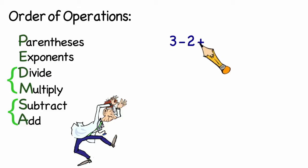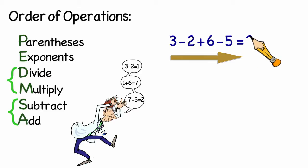3 minus 2 plus 6 minus 5. According to the rules of operation, when there's only subtracting and adding, we work from left to right. So it would be 3 minus 2, which is 1, plus 6, which is 7. And then we subtract 5, leaving us with an answer of 2.